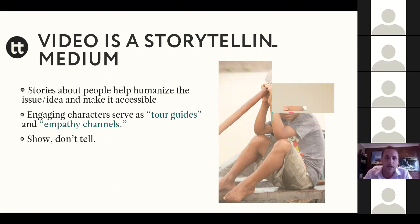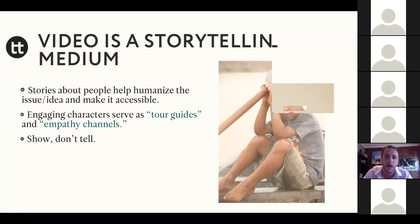A lot of the think tanks and researchers I work with get hung up here, saying the issue they're working on doesn't really have an obvious person to tell a story about. But to me, public policy is inherently about people. Every policy problem is only a problem because of the impact it has on someone's life. Every good solution is only a good solution because of the change it has on a person's life. So there are always people — you may have to dig a few layers further depending on the issue you're working on, but how can you find those people and get into their world?